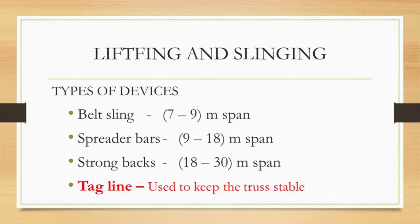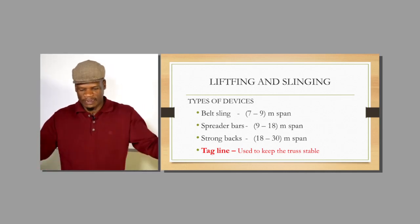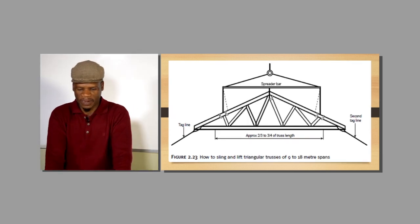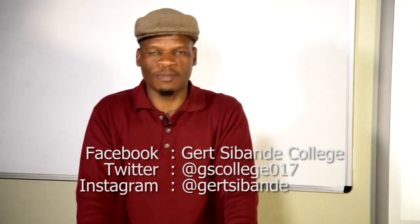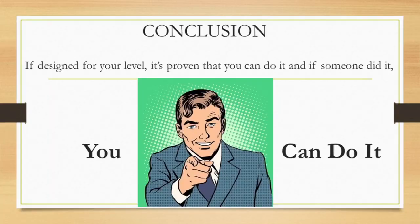In terms of lifting and slinging, you have your belt sling, spreader bars, strong back, and tagline. The tagline is used alongside all of those — whether you are using the belt, the spreader, or the strong back, you must use the tagline. The tagline is used on the side of the trusses to control the position where the truss has to be placed; otherwise, if you lift without a tagline, it will swing around and be very difficult to position. If you have any questions or need extra information, please use the contact details at the bottom of the screen.